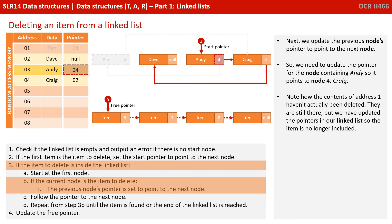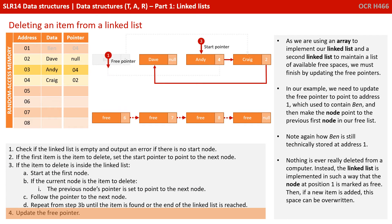Note how the contents of address 1 haven't actually been deleted — they're still there, but we've updated the pointers in our linked list so the item is no longer included. As we're using an array to implement our linked list and a second linked list to maintain a list of available free spaces, we must finish by updating the free pointers. In our example, we need to update the free pointer to point to address 1, which used to contain Ben, and then make the node point to the previous first node in our free list. Note again how Ben is still technically stored at address 1 — nothing is really deleted from a computer. Instead, the linked list is implemented in such a way that the node at position 1 is now marked as free, and if a new item is added, this space would be overwritten.